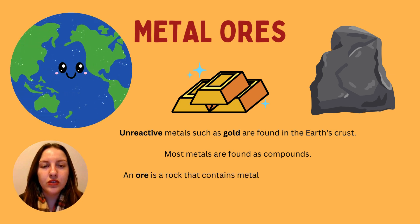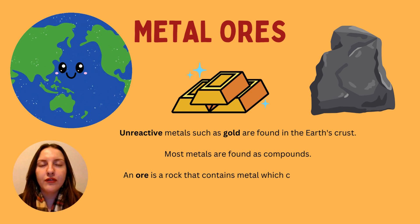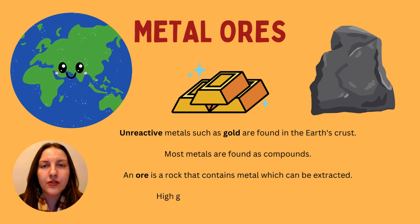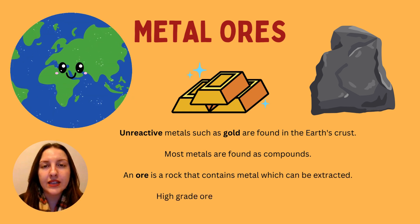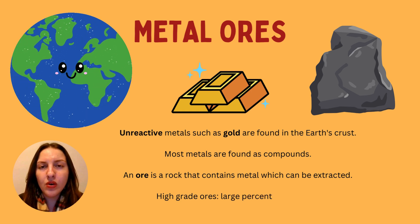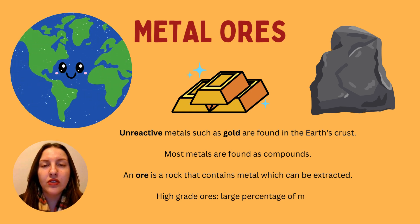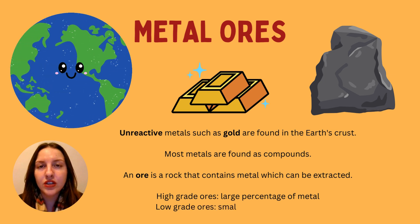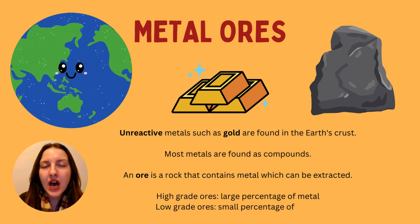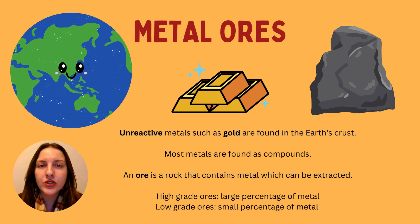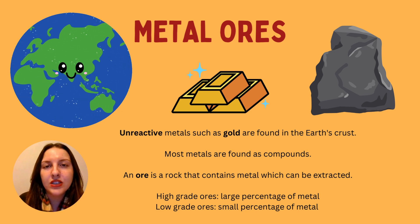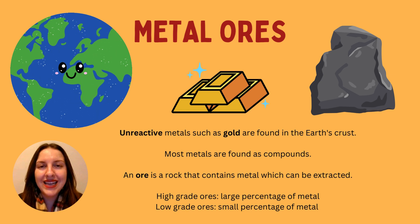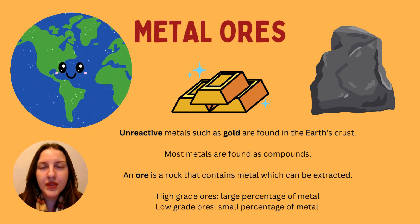Unreactive metals such as gold are found in the earth's crust. However, most metals are actually found as compounds. An ore is a rock that contains metals which can actually be extracted. You can have two different types of ores: higher grade ores which have a high percentage of the metal, or low grade ores that actually have less of that metal within them.